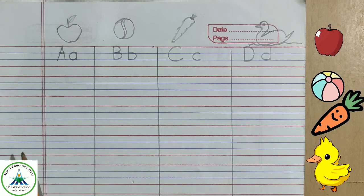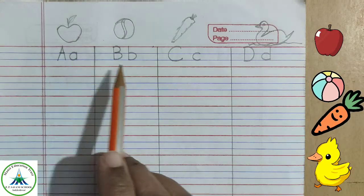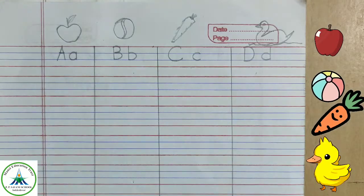Hello kids, now we will see how to write letter A, B, C, D in four line.